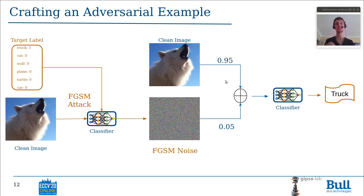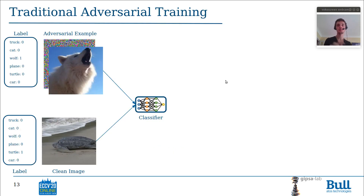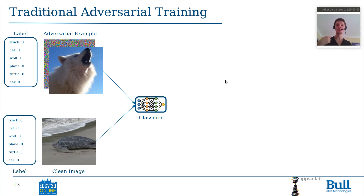but instead a truck, because truck is the target label of the attack. So, the idea of adversarial training is to train the classifier on both adversarial examples and clean images so as to make classifiers more robust to adversarial examples, because it has been trained on them and so it knows that it can be attacked by some adversarial patterns.